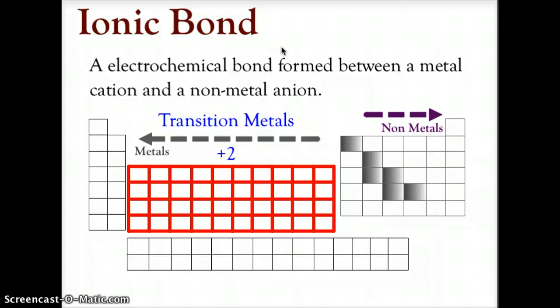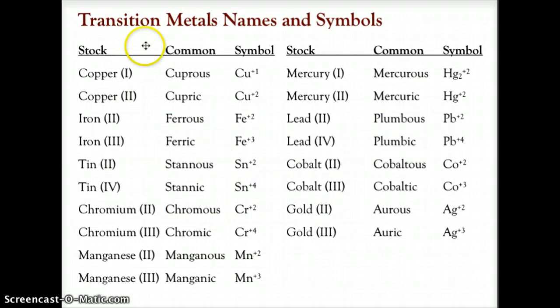We're going to focus today on the transition metals, primarily this group in what we've come to refer to as the D-block. Typically we look at the transition metals, look at the valence shell, and realize they have two electrons in the S — and typically they would become plus-two cations. But in many cases, these transition metals will form more than one type of ion.